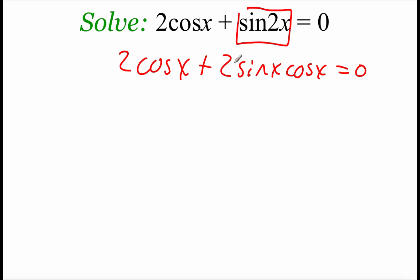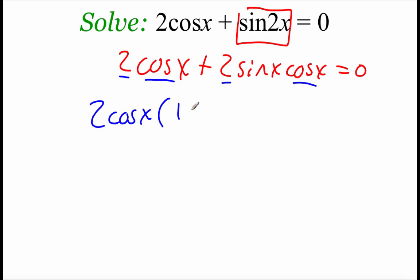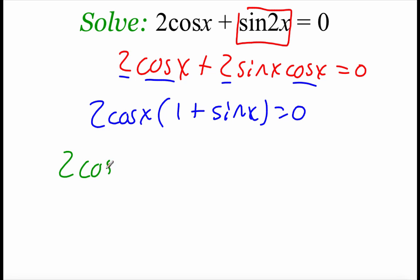Now looking at solving this, we can do a little GCF factoring because there's a 2 in each of these terms and there's also a cosine in each one. So we're going to factor out 2 cosine of x. Then inside the parentheses we've got 1 plus the sine of x, all equal to 0. After we have this factored, we take each factor and set it equal to 0 to solve — so 2 cosine of x equals 0, and 1 plus sine of x equals 0.